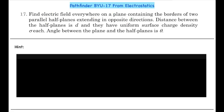Hey guys, so here we have question number 17 from the 'Build Up Your Understanding' exercise of the chapter electrostatics from Pathfinder. Find the electric field everywhere on a plane containing the borders of two parallel half-planes extending in opposite directions. The distance between the half-planes is d and they have uniform surface charge density sigma each. The angle between the plane and the half-planes is theta.